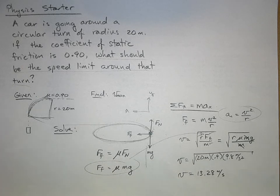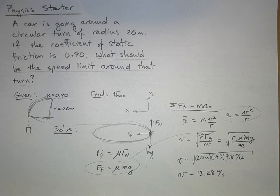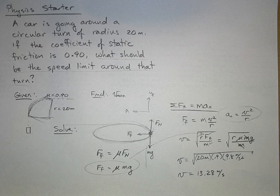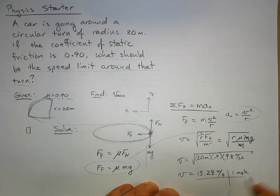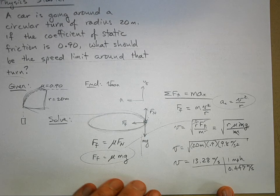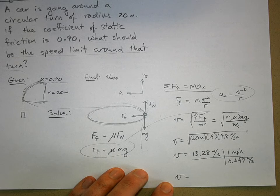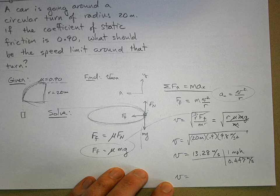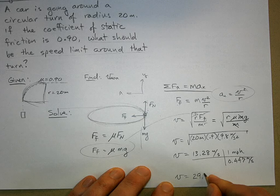Since we live in America we don't use kilometers per hour—we use miles per hour. There is a unit conversion: one mile per hour equals 0.447 meters per second. So the maximum possible velocity—let's see, divided by 0.447—is 29.7 miles per hour.